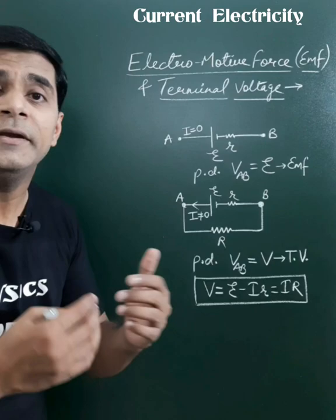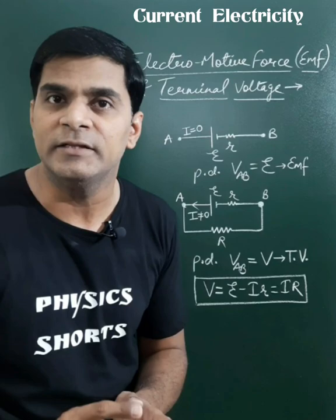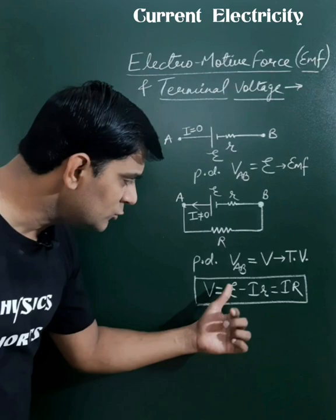The voltage across this cell when current is flowing through it, or the voltage across the external resistance, is called the terminal voltage. This terminal voltage is related to the EMF by the equation V = E - IR, where I is the total current flowing through this circuit and small r is internal resistance. We can also write V = IR. This equation is valid during discharging of the cell.